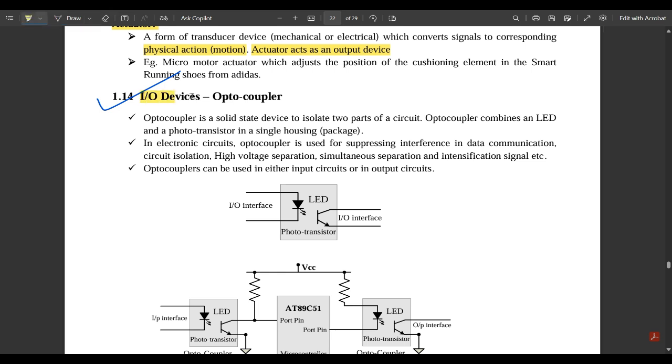An optocoupler is a solid-state device used to isolate two parts of the circuit. Optocoupler combines an LED and a photo transistor in a single housing package. You can see this block here: LED and a photo transistor in a single package. Inside a single box we have both the LEDs as well as the photo transistor, and these are the interfacing between input and output.